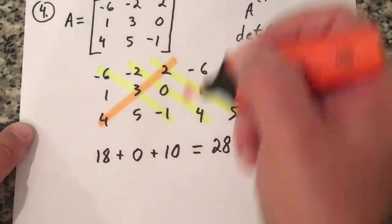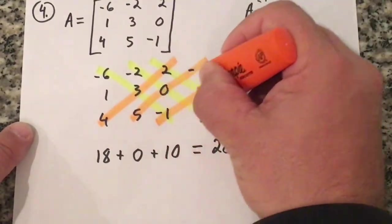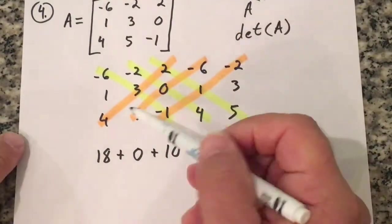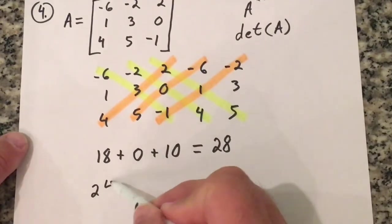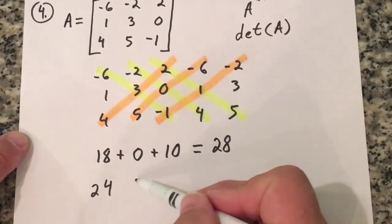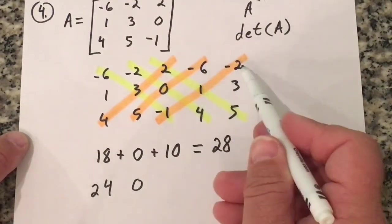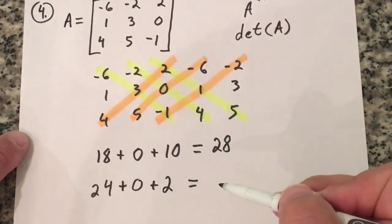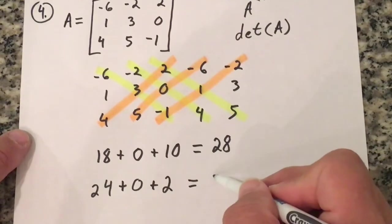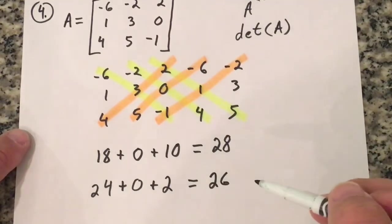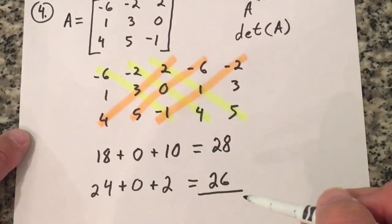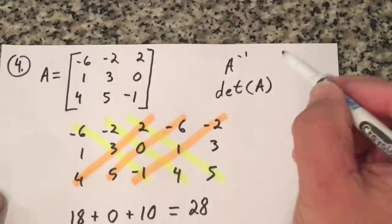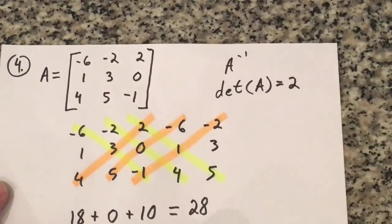Now I'm multiplying on this diagonal — this diagonal and this diagonal. 4 times 3 times negative 2 is... 4 times 6 is 24. 5 times 0 times negative 6 is 0. Negative 1 times 1 times negative 2 is 2. Add these up, that's going to equal 26. So 28 minus 26 — this minus this is 2. The determinant of A equals 2. That's the first step.